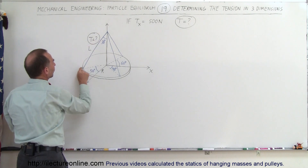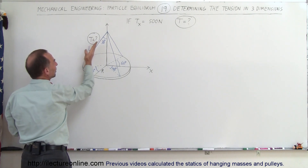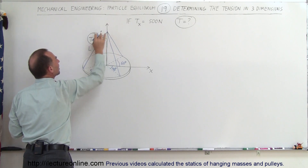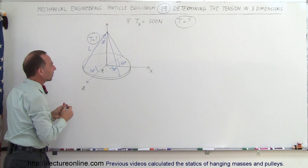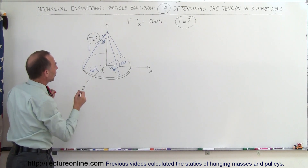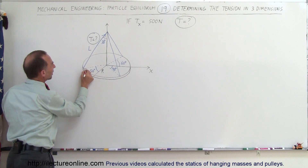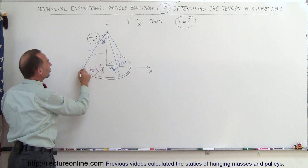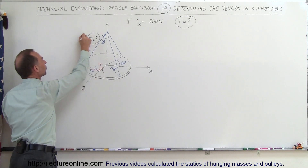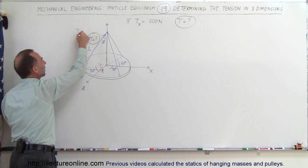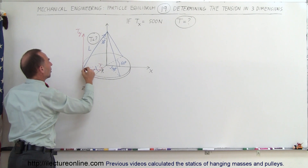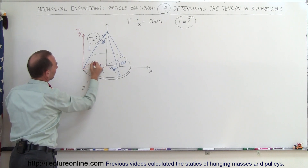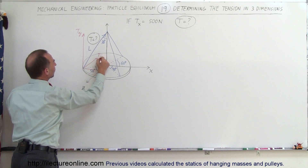From this point, the tension acts in this direction — that is the tension T we're looking for. The component in the x direction is T sub x, T sub y is in the direction of the y-axis, and T in the z direction is parallel to the z-axis.